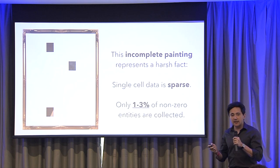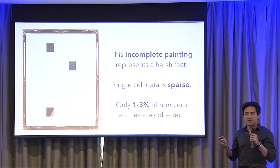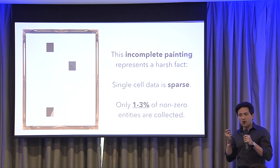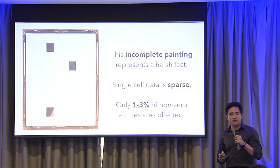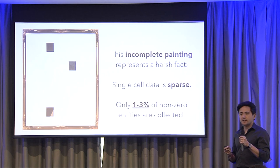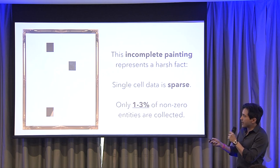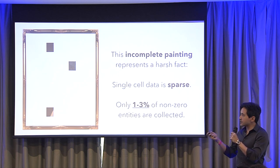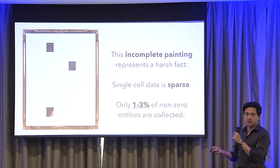We only collect maybe one to three percent of all the open chromatin regions at the single cell level. There are 100 squares here, and I've only represented three of those — that's as much information as we can collect on a single cell at a time.